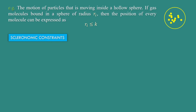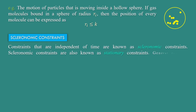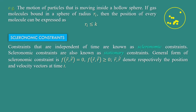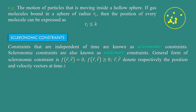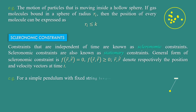Scleronomic constraints: constraints that are independent of time are known as scleronomic constraints. Scleronomic constraints are also known as stationary constraints. The general form of scleronomic constraints is f(r⃗, r⃗̇) = 0, or f(r⃗, r⃗̇) ≥ 0, where r⃗ and r⃗̇ denote respectively the position and velocity vectors at time t.